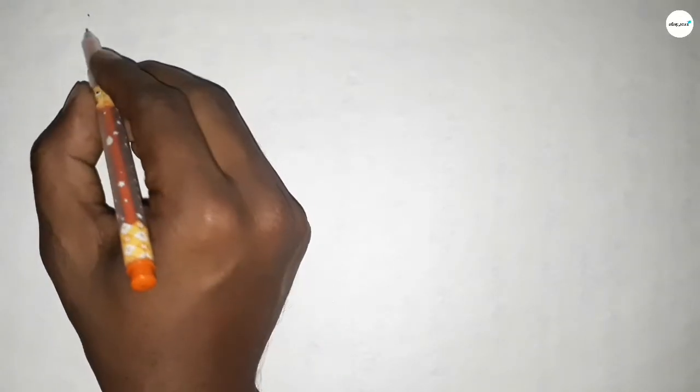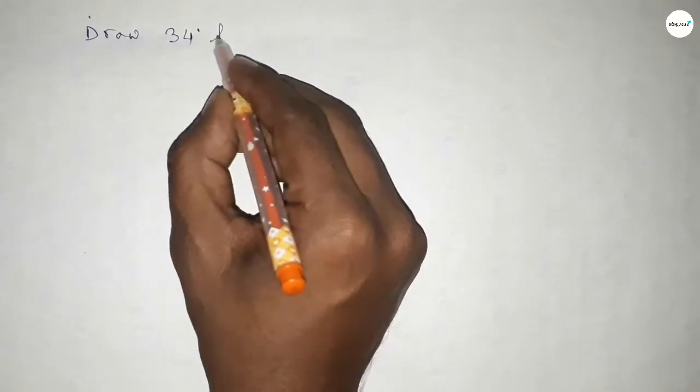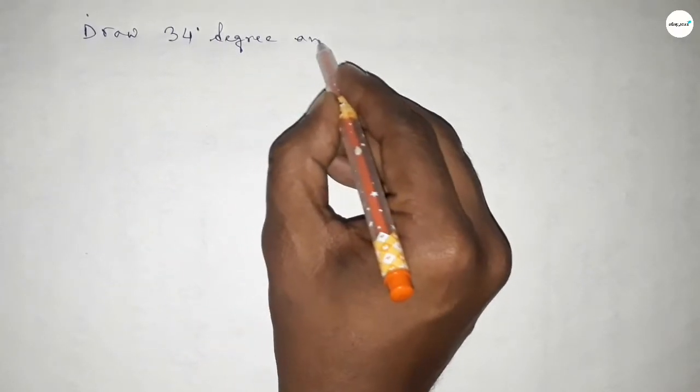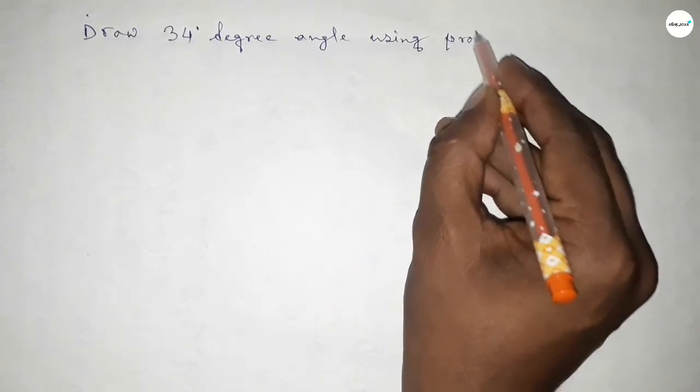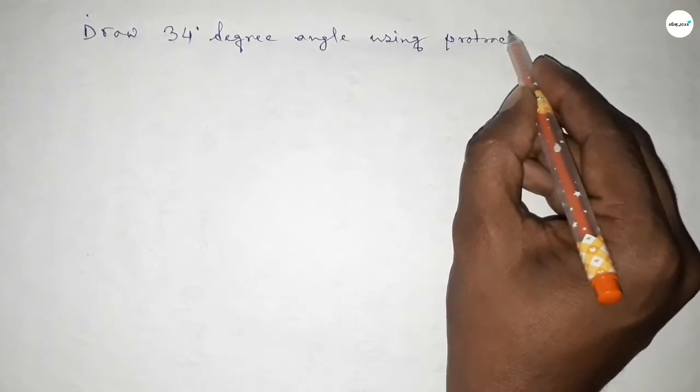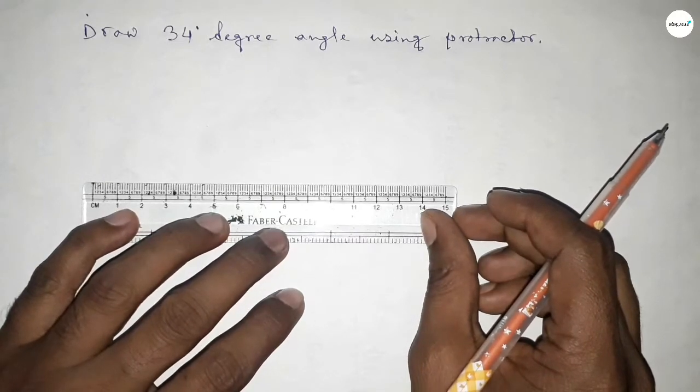Hi everyone, welcome to SI Share Classes. Today in this video we have to draw a 34-degree angle by using a protractor. So constructing a 34-degree angle, let's start the video.